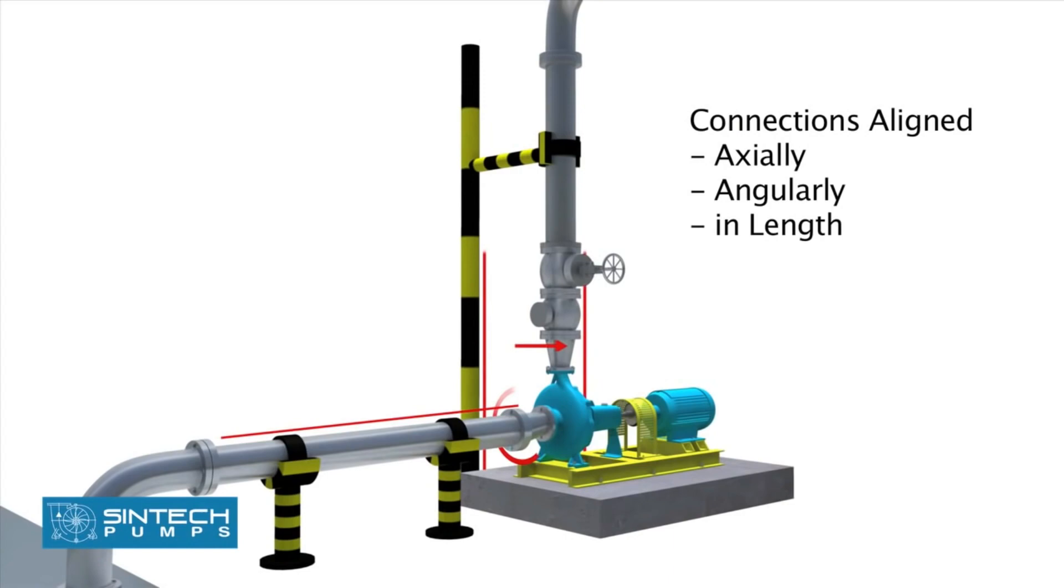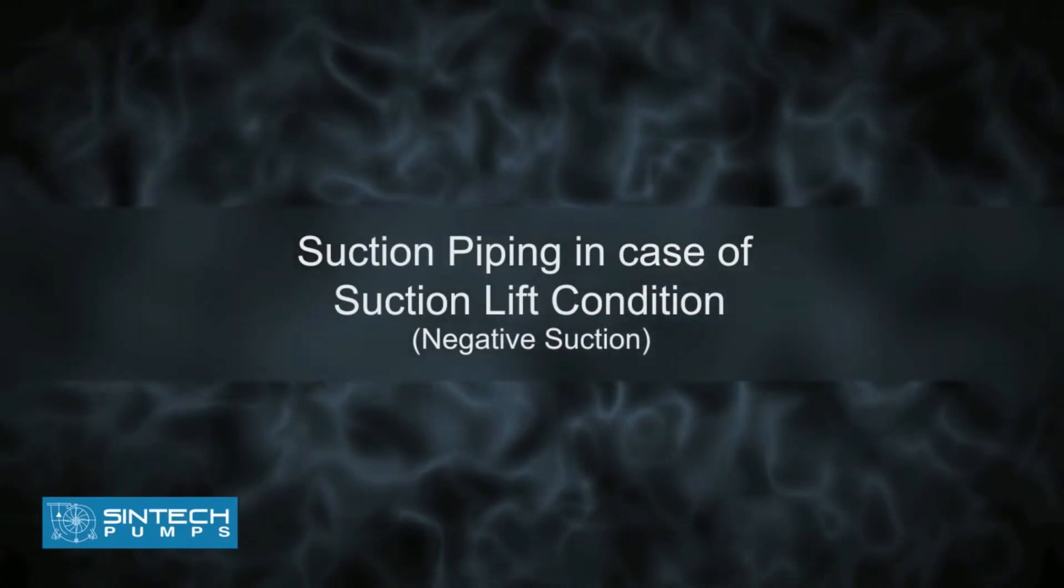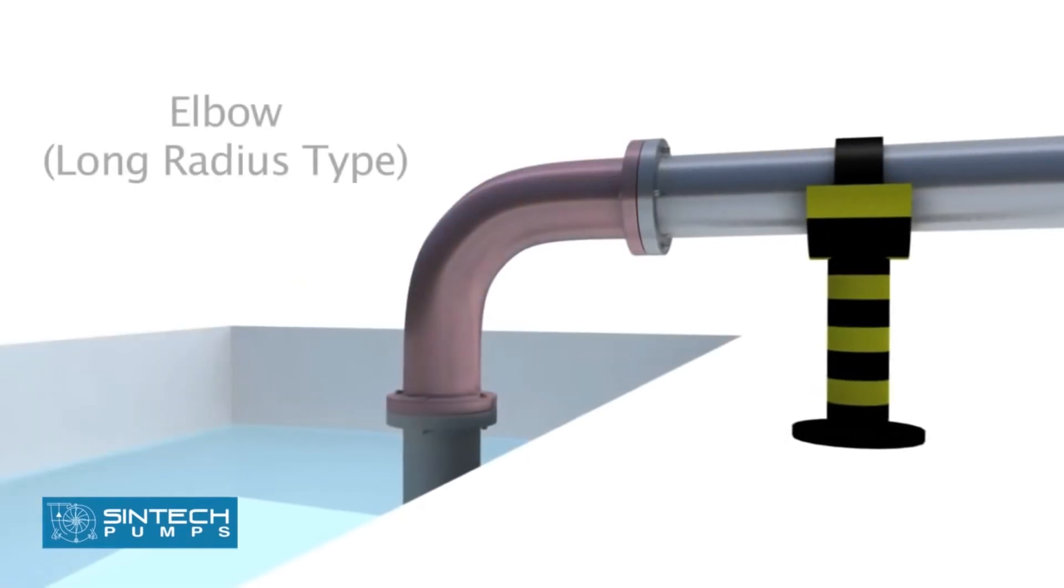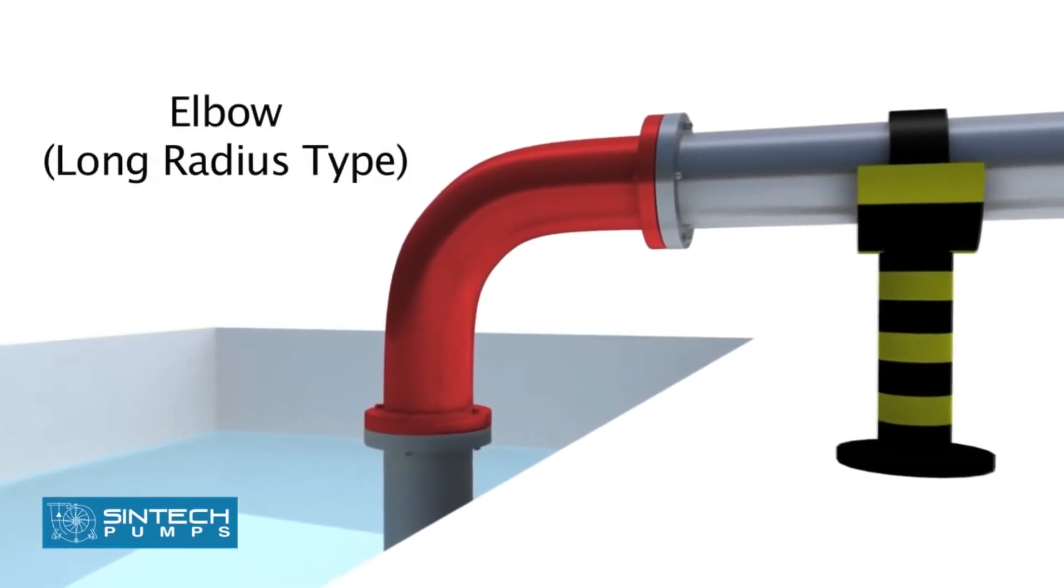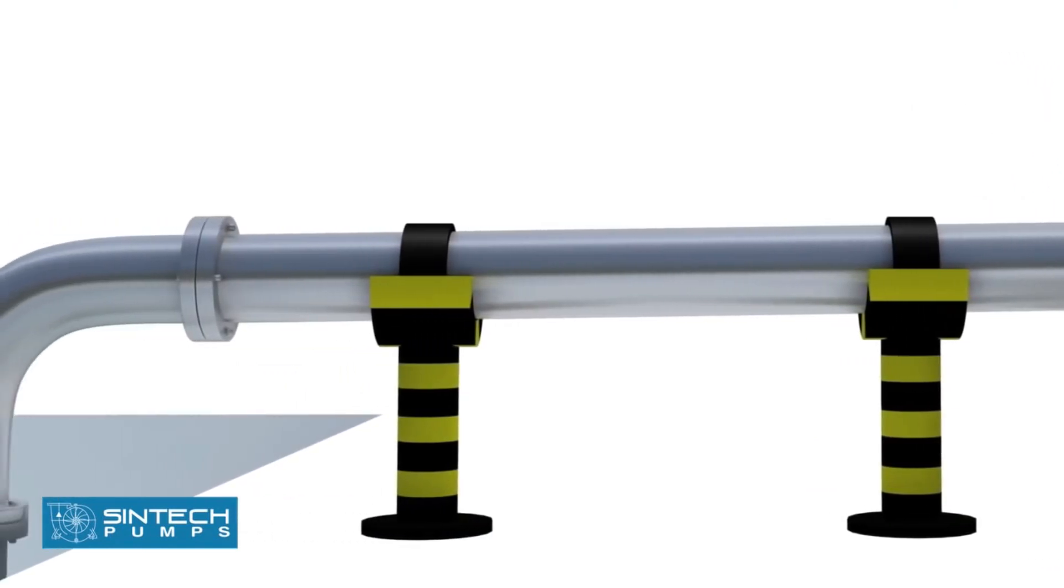Suction piping in case of suction lift condition (negative suction): the piping drum and the connection fittings should be properly aligned and supported separately. The elbow should be of long radius type. All suction piping must be airtight.